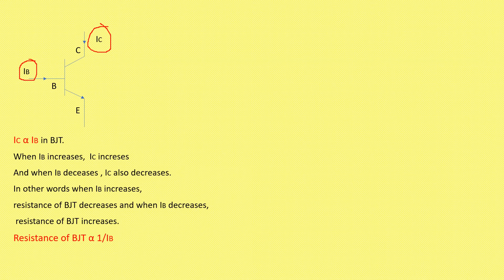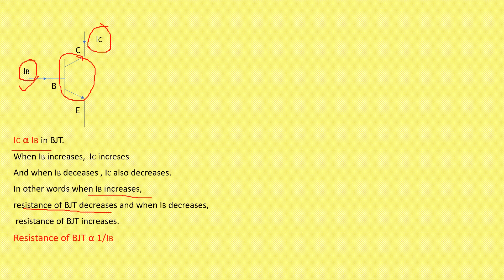That means if IB increases, IC increases. If IB decreases, IC decreases. In other words, when IB increases, the resistance of the BJT decreases. When IB decreases, the resistance of the BJT increases. So we can write: resistance of BJT is inversely proportional to IB.